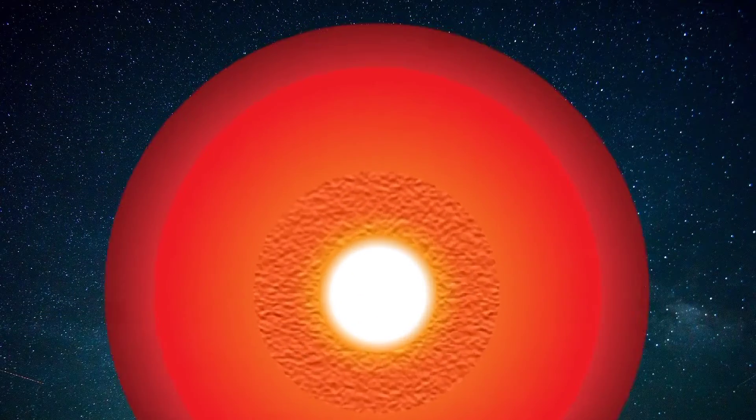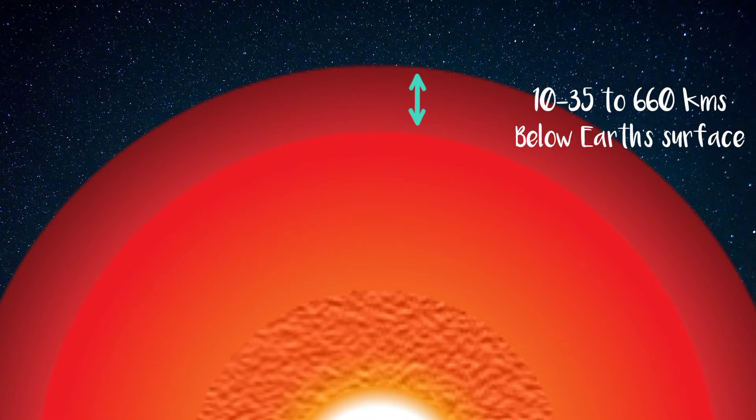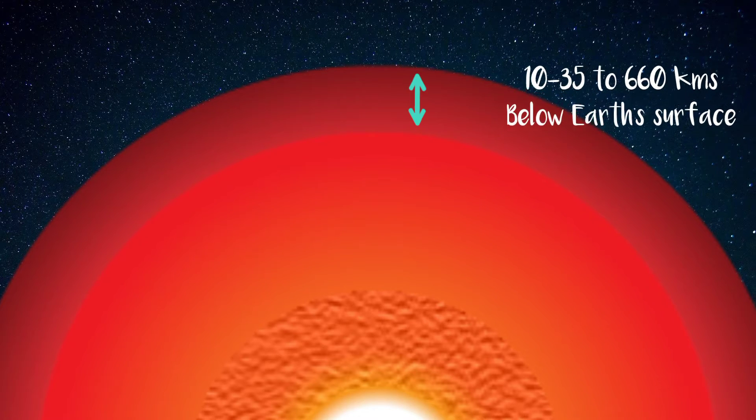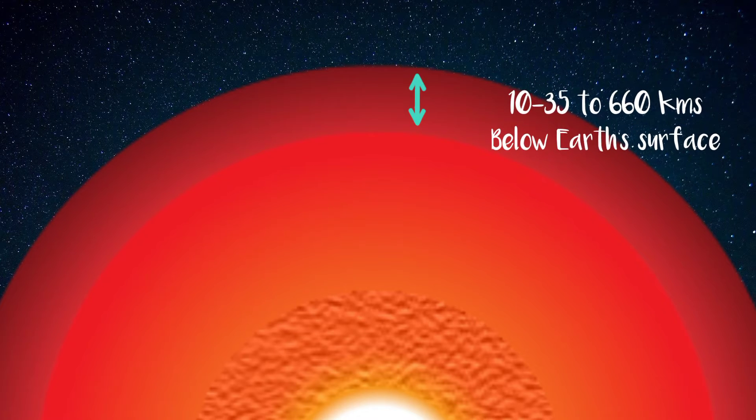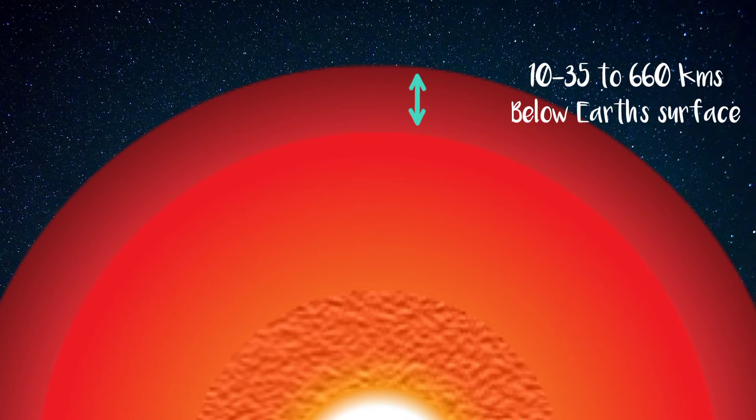The upper mantle of Earth is a very thick layer of rock inside the planet, which begins just beneath the crust at about 10 kilometers under the oceans and about 35 kilometers under the continents, and ends at the top of the lower mantle at 660 kilometers.